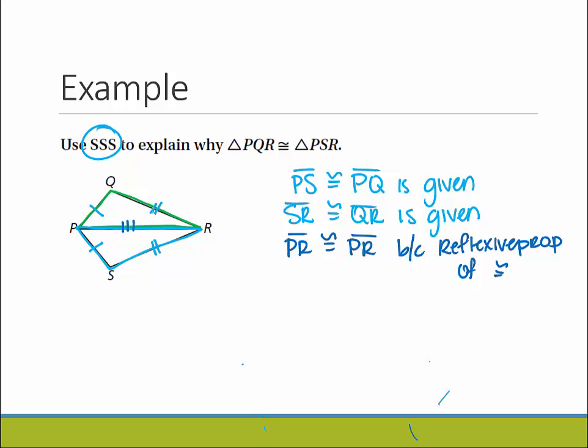Now we have three sides on each that are the same. So we can say by side-side-side, the triangle PQR is congruent to triangle PSR.